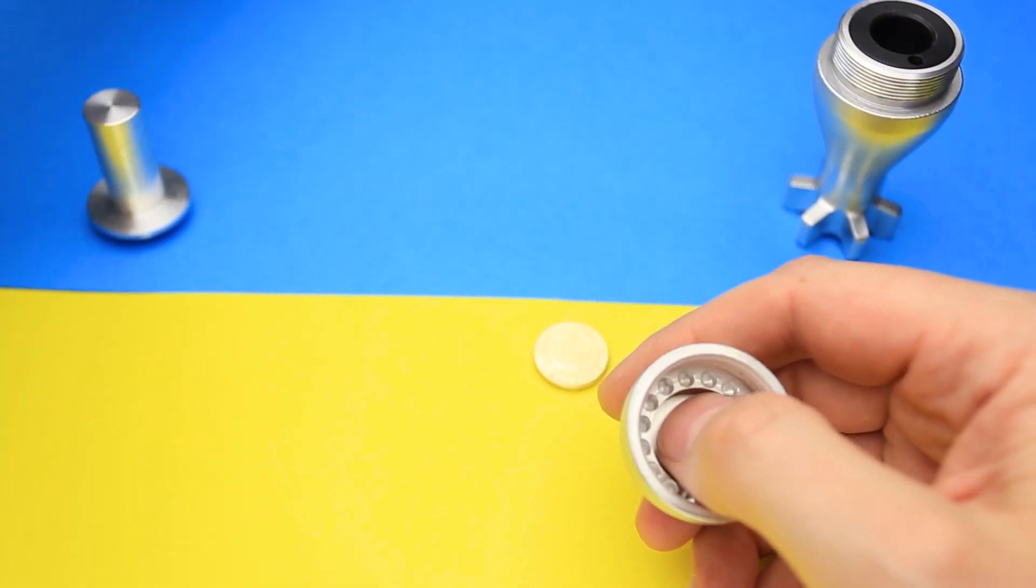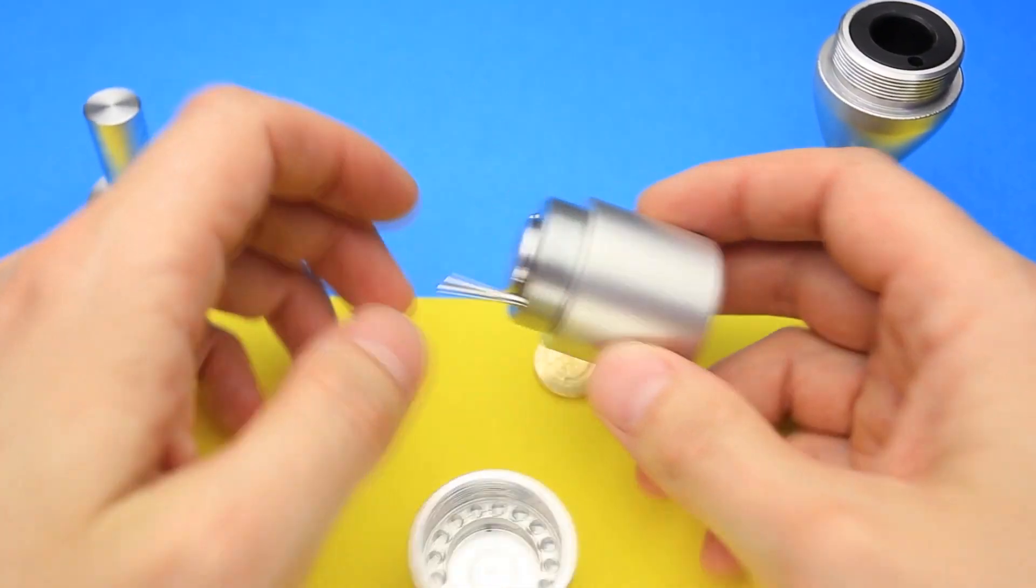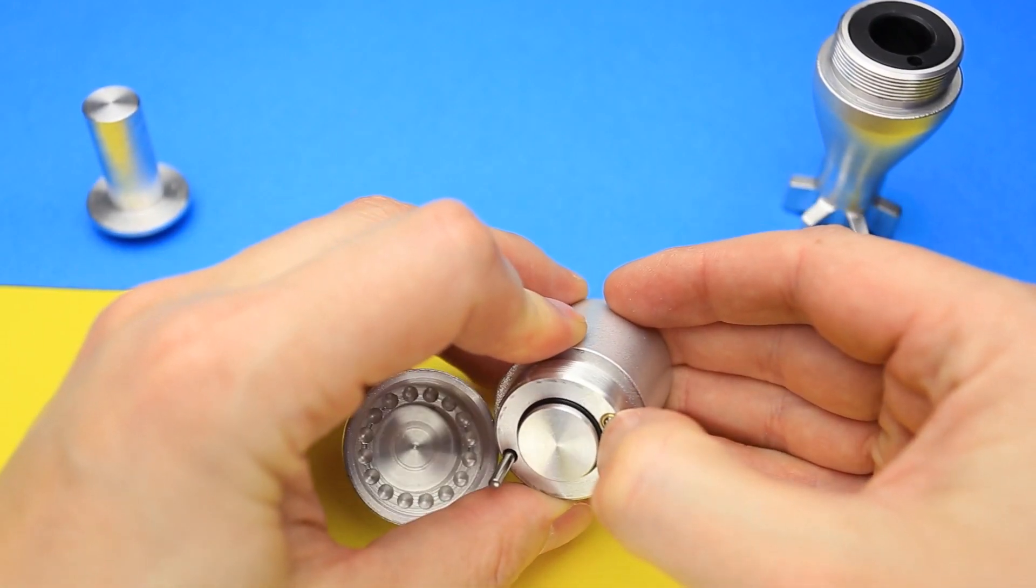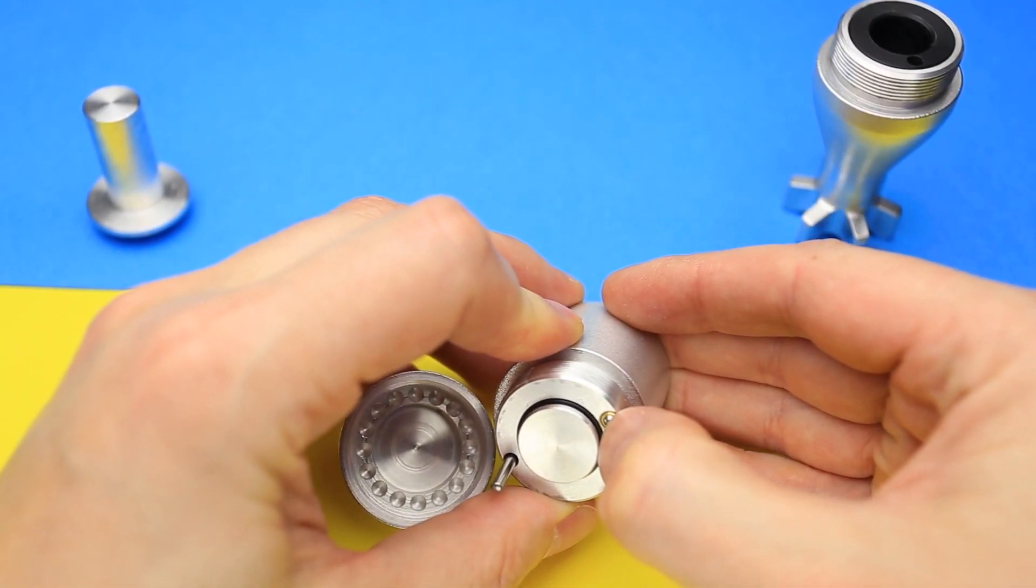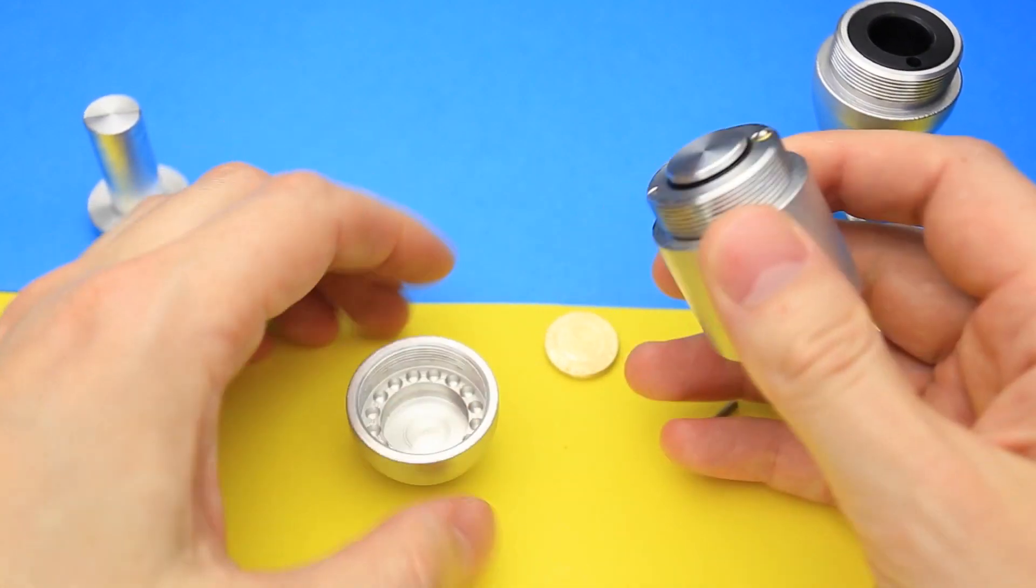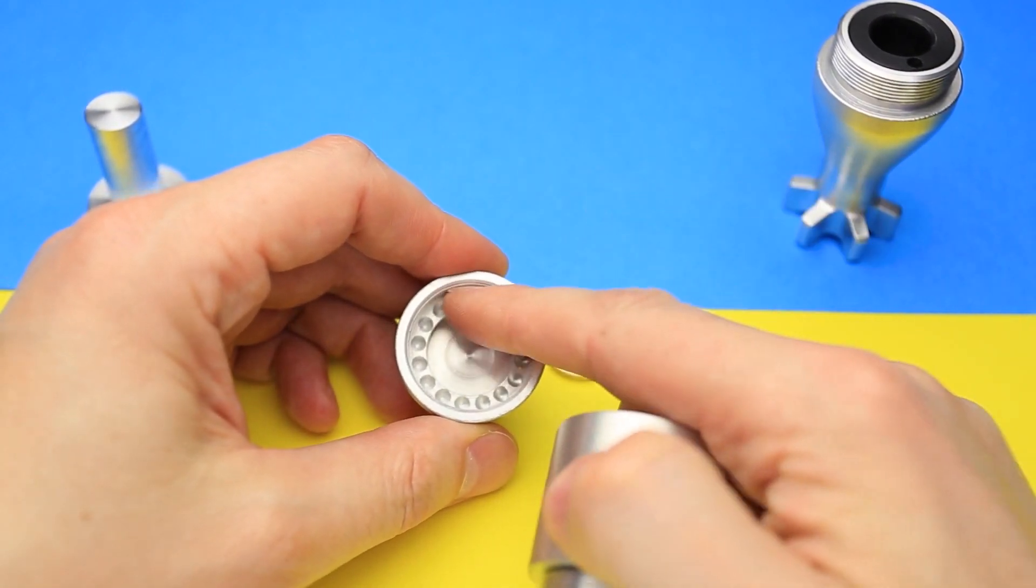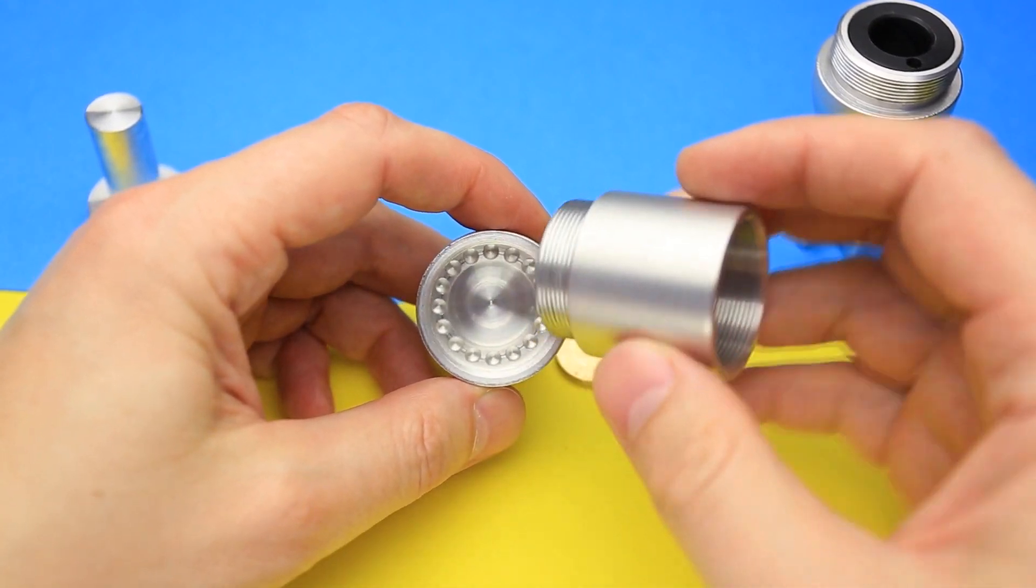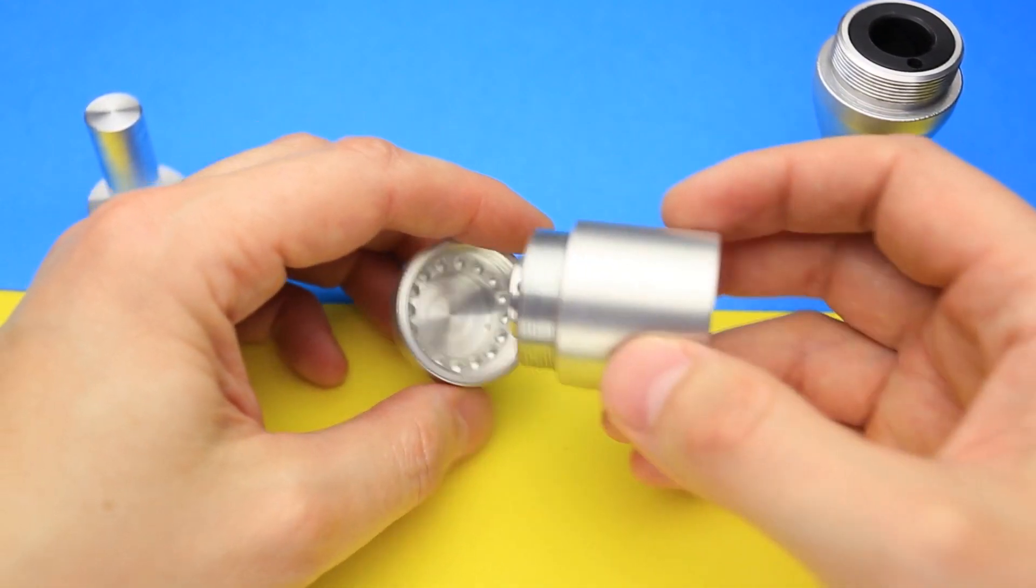Let's see what makes those click sounds. There is a small ball and it has a spring. So when this part goes inside, it clicks on the cutouts that you see there. So it makes it a little bit difficult to unscrew.